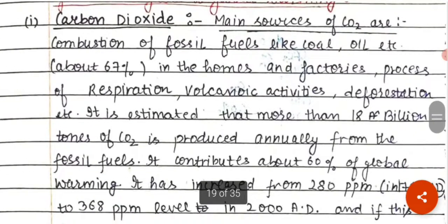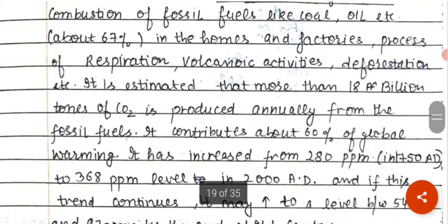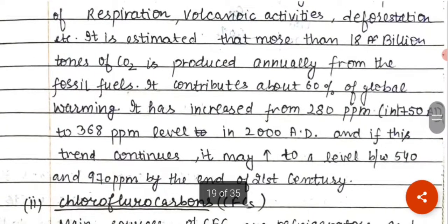CO2 is a major greenhouse gas. The main sources of CO2 are combustion of fossil fuels like coal and oil, emissions from homes and factories, volcanic activities, and deforestation. It is estimated that more than 18 billion tons of CO2 is produced annually from fossil fuels, and it contributes about 60% of global warming. The major contribution to global warming is from carbon dioxide.